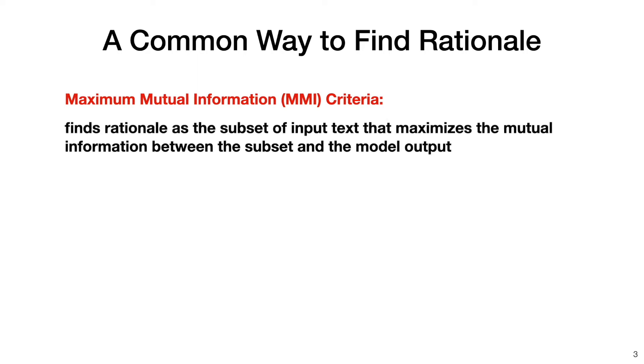Over the recent years, people have proposed different specific criteria for finding rationales. One very common criterion is called the maximum mutual information criterion, or MMI. MMI defines the rationales as the subset of the input that maximizes the mutual information between the subset and the model output, subject to certain sparsity and continuity constraints.